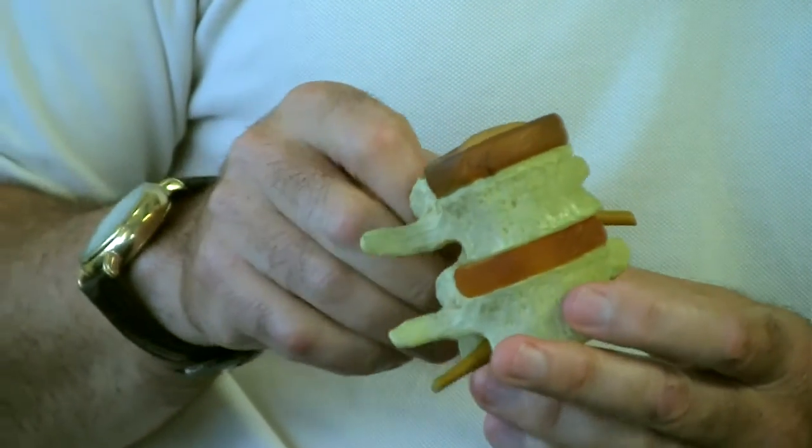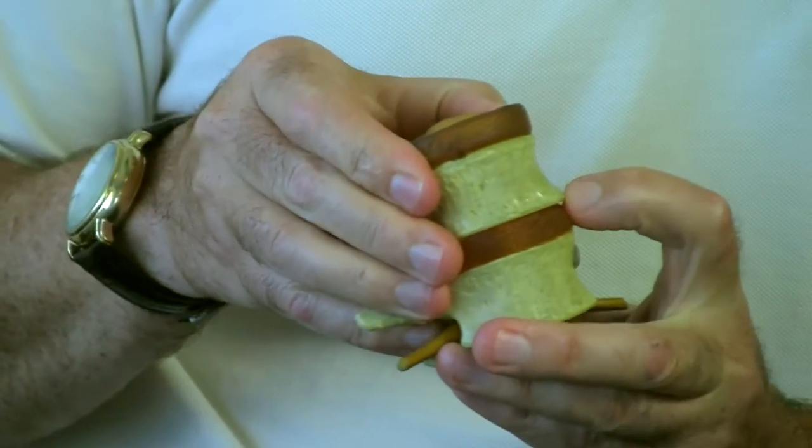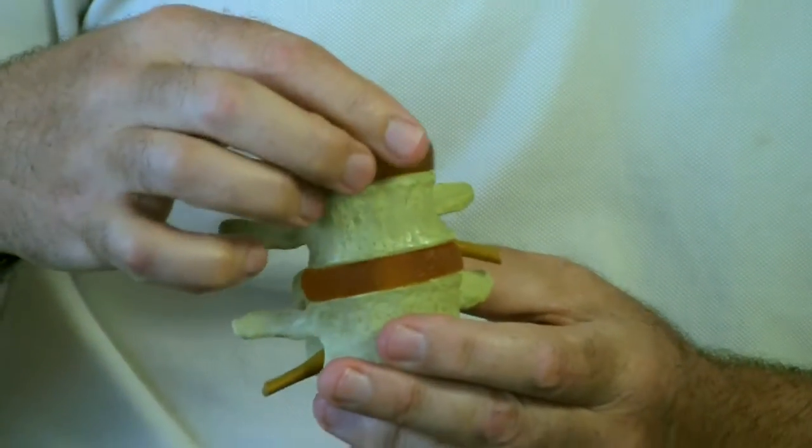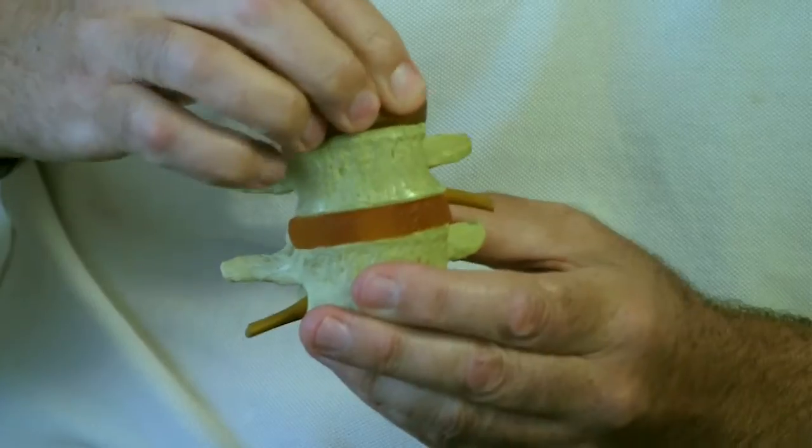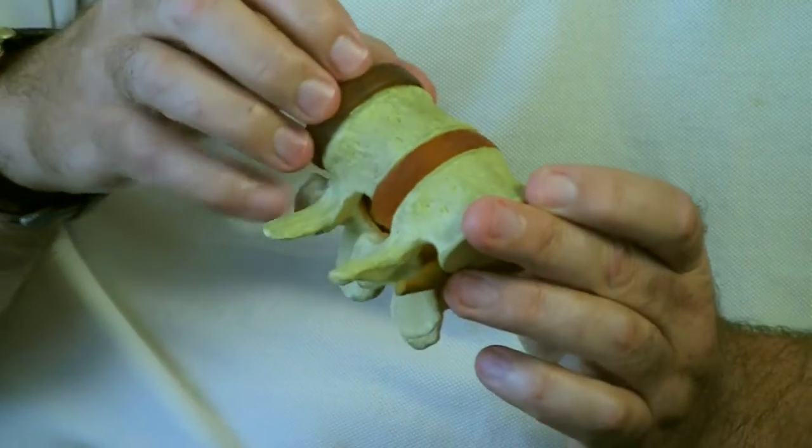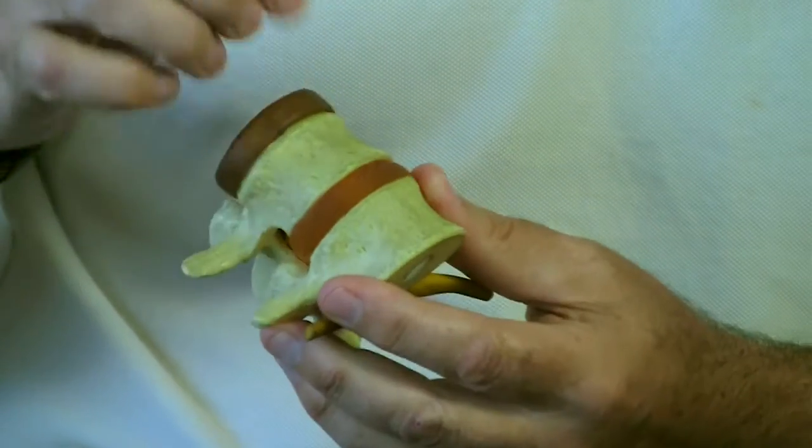And when it moves that way, and when everything is functioning properly, the disc will be nice and gushy. They're kind of like jelly donuts cushioning in between each bone.